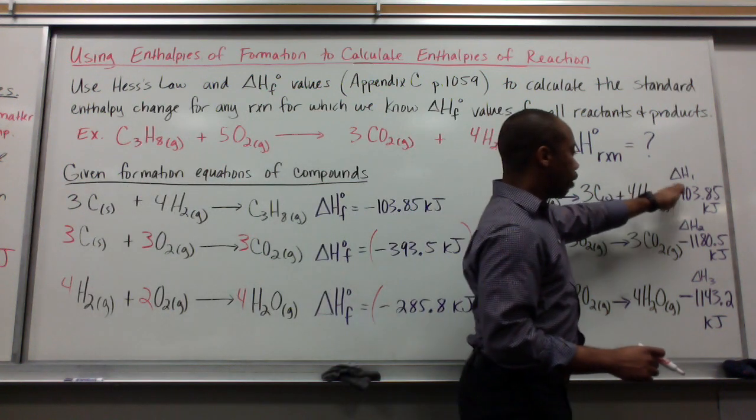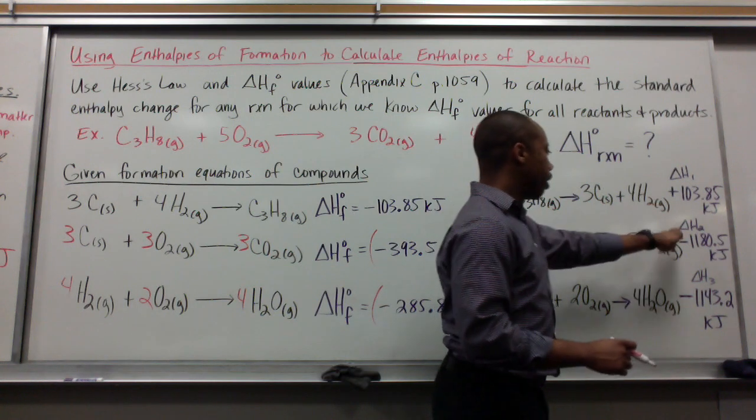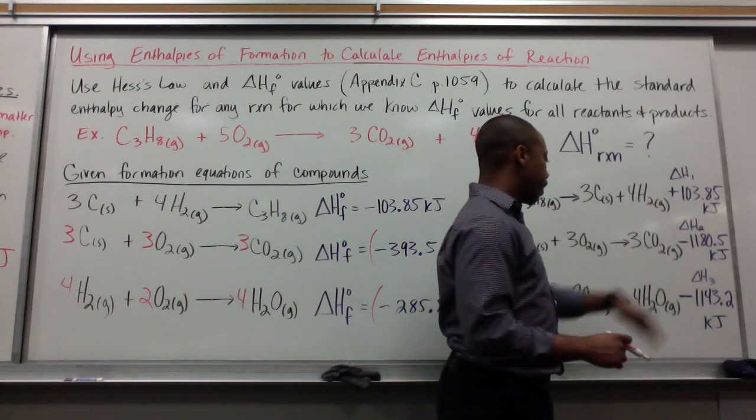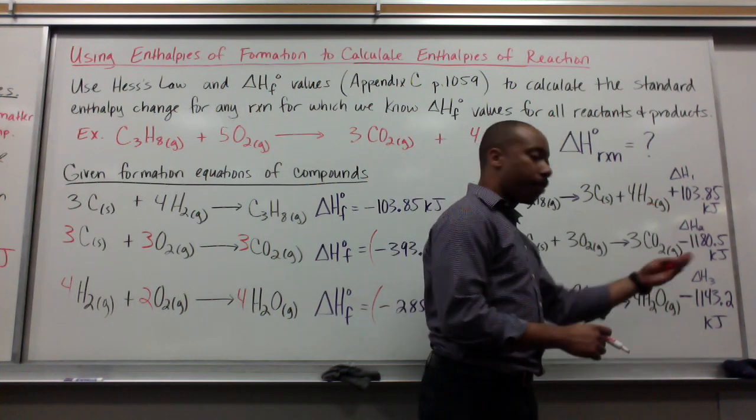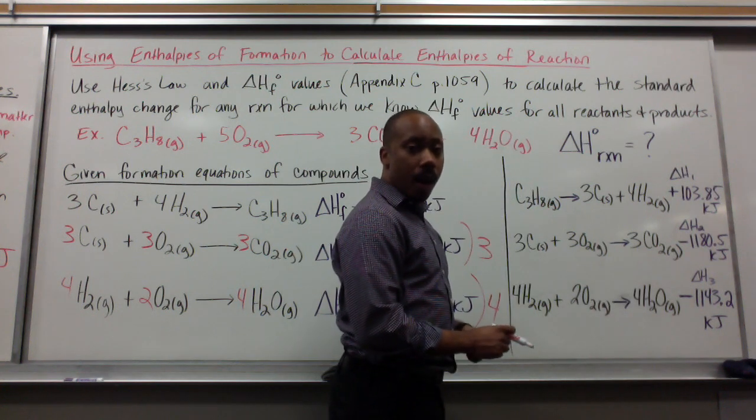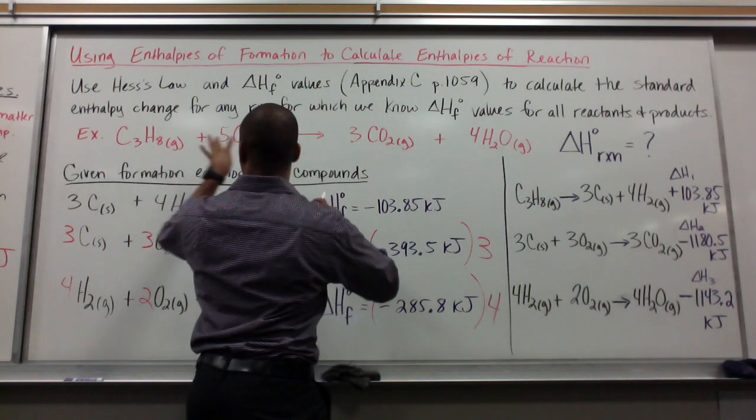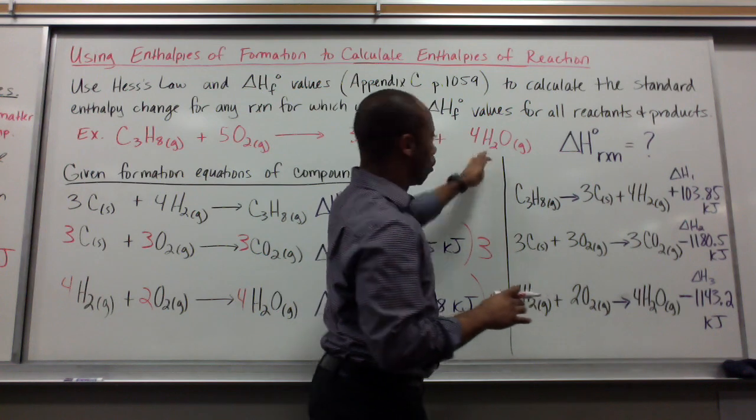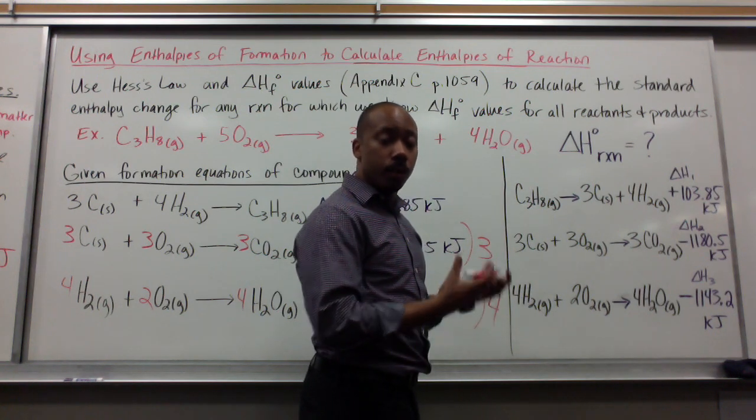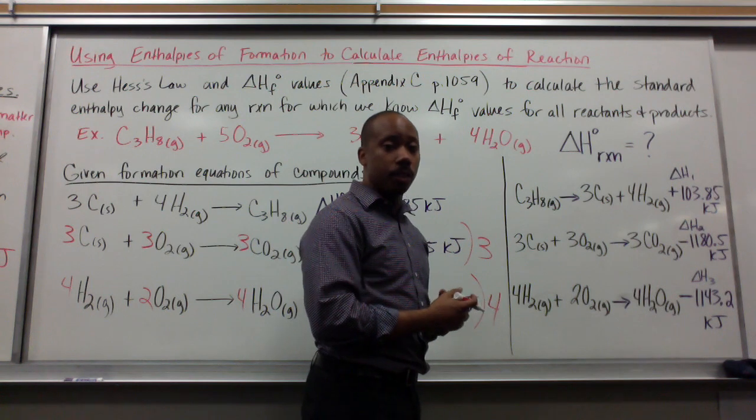Alright. So I have my delta H₁ of my first reaction. Delta H₂ of my second reaction. Delta H₃ of my third reaction. Now, I want this to be my final reaction. So I'll see what cancels out according to Hess' law.